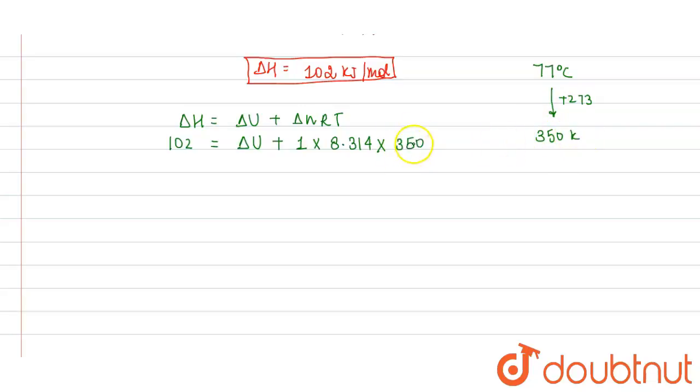So into 350 kelvin. So from here, delta U will be equals to, divide this by 1000 so that you can convert it into kilojoule, so 102 minus 2.9.